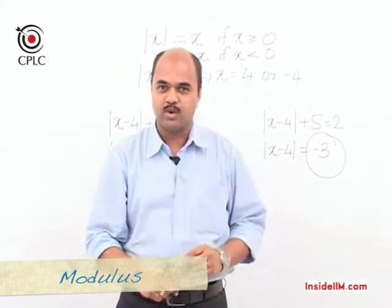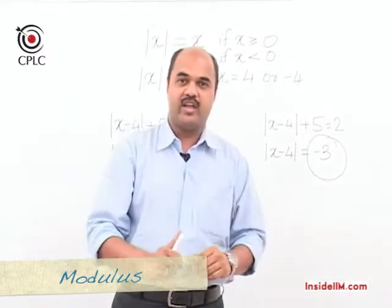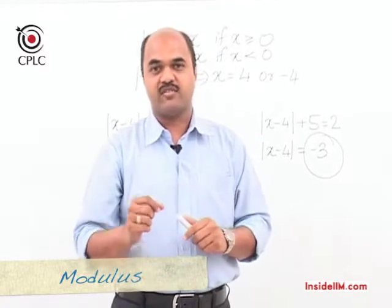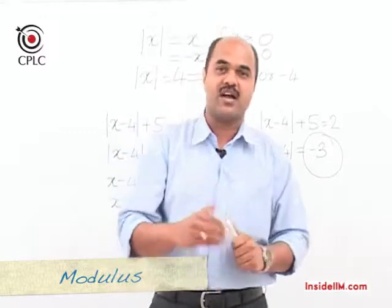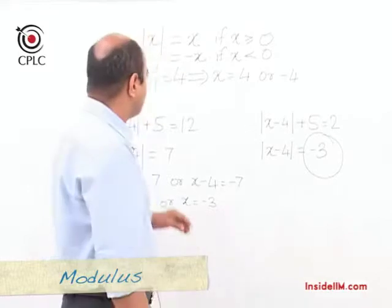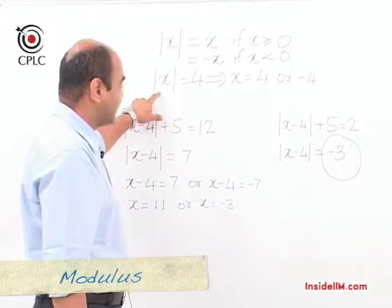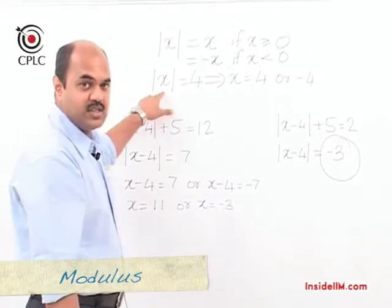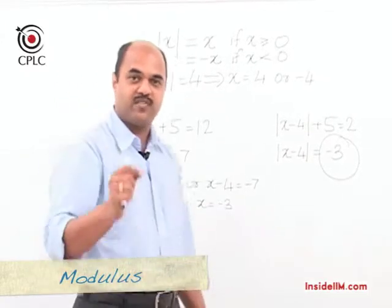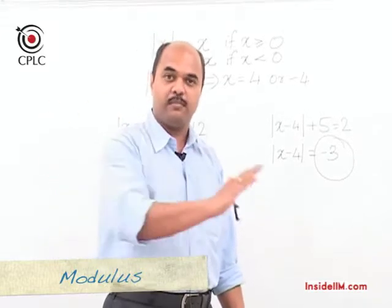Let's try and understand modulus slightly differently using another approach. When we say mod x, what we actually mean is the distance of x from the origin. This is a graphical method of solving questions involving modulus. So when I say mod x equals 4, it means the distance of x from the origin equals 4. Hence, x can be either plus 4 or minus 4.